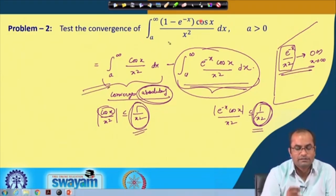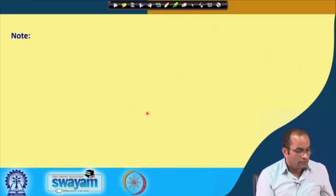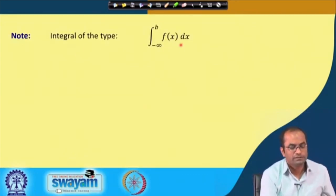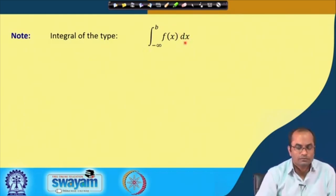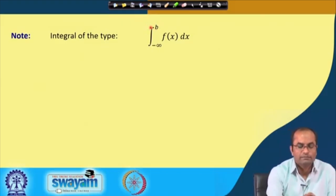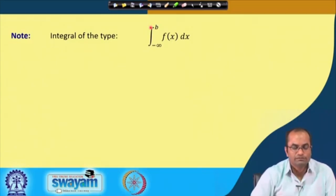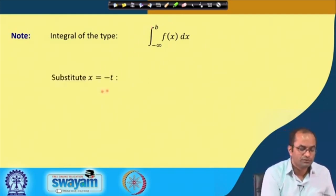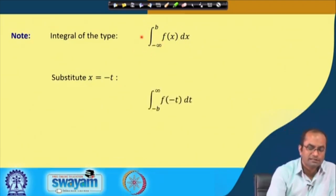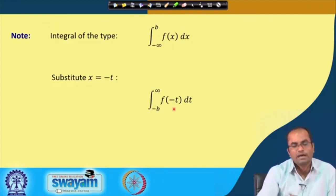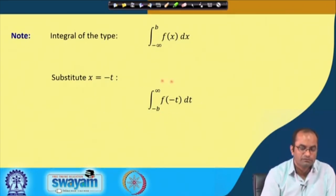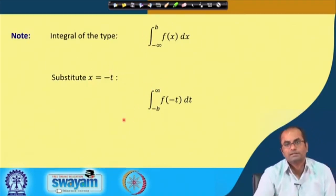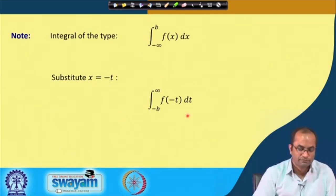Therefore, the given integral from 1 to infinity of (1 − e^(−x))cos(x)/x² dx converges. As a note, integrals of the type from −∞ to b can be handled by the substitution x = −t, which converts them into the type from −b to infinity, and then the convergence can be discussed in the same way as before.